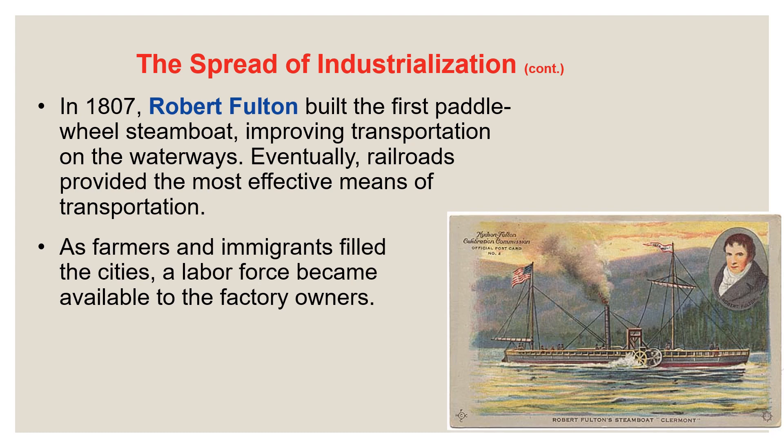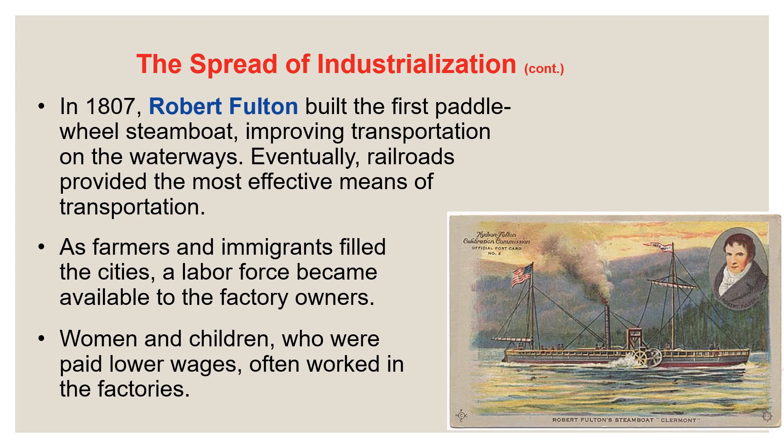In 1807, Robert Fulton built the first paddle-wheel steamboat, improving transportation on the waterways. Eventually railroads provided the most effective means of transportation in the United States, but the steamboat was also a United States invention that transformed transportation along rivers and eventually between the United States and Europe on the high seas. As farmers and immigrants filled cities in the United States, a labor force became available for factory owners to expand their industries. Women and children, who were paid lower wages, often worked in factories as well — the same pattern seen in Great Britain and other parts of Europe.